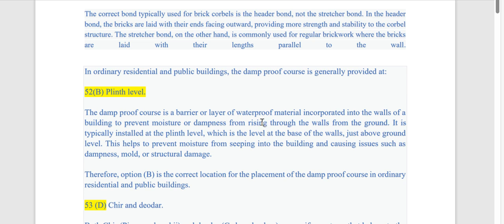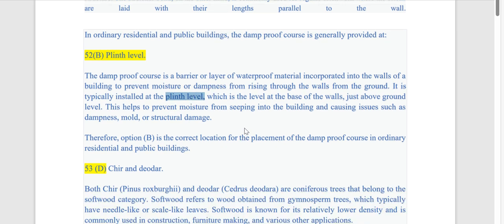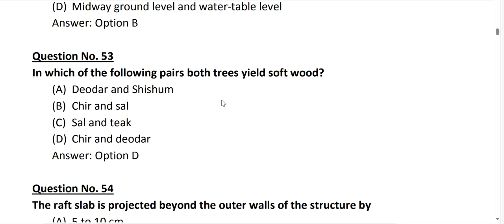Next question number 52. In an ordinary residential and public buildings the damp proof course is generally provided at ground level, plinth level, water table level, or midway between ground level and water table level. Here option B is correct, plinth level. The damp proof course is a barrier or layer of waterproof material incorporated into the walls of a building to prevent moisture or dampness from rising through the walls.